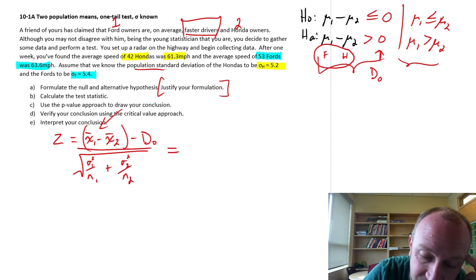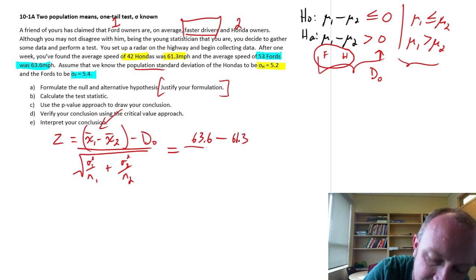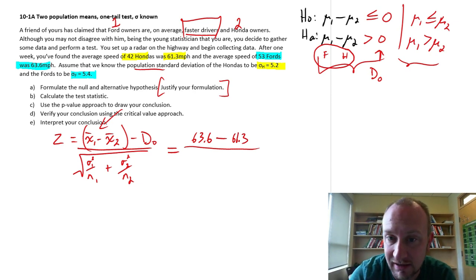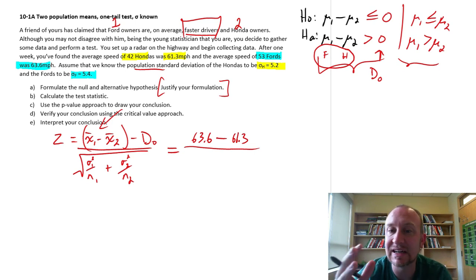So this is the sample mean for the Ford drivers, which is 63.6 minus the Honda drivers, which is 61.3. So here we can see already that this is going to give us a positive test statistic. Had I defined my populations the other way around, this would be 61 minus 63, and now we'd have a lower tail test statistic. So it does change some of the results, but you'd still get exactly the same conclusions.